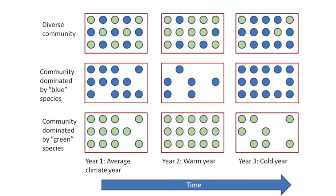This can be illustrated by a simple example. Imagine we have a grassland with two species: a blue and a green species. The blue species is more productive when it's colder and the green species is more productive when it's warmer. If you only have a single species, your grassland will lose productivity under changes of temperature. A grassland with two species with different traits is more stable with respect to productivity and more robust to temperature changes.